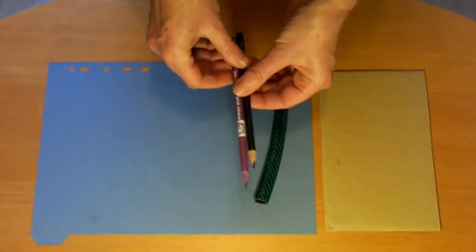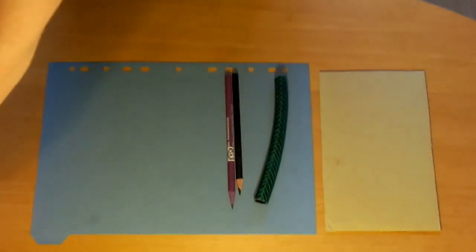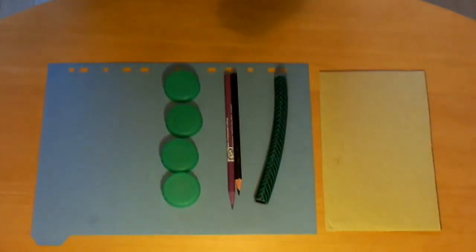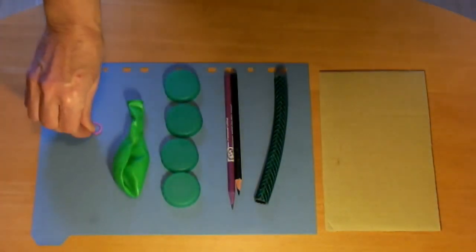Two round pencils, 16 centimeters long or longer, or crayons. Four plastic milk bottle lids, a balloon, and a small rubber band.